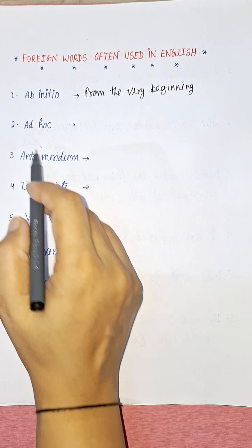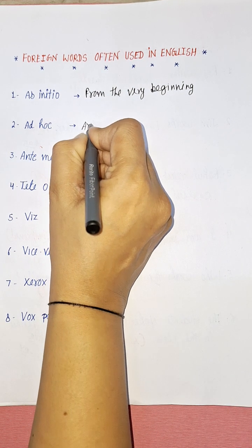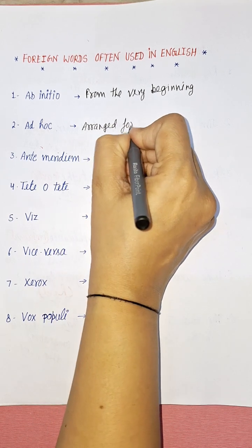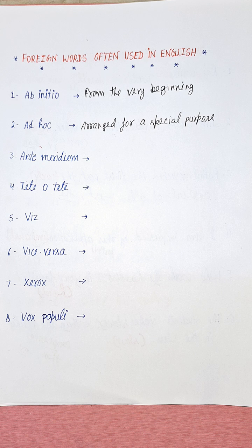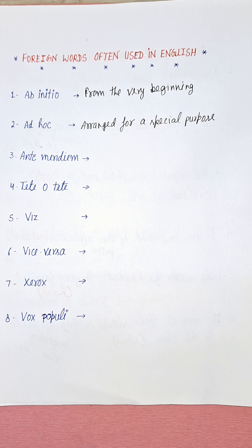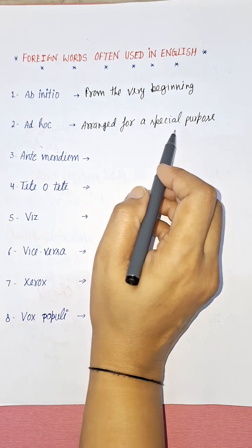Now let's take the next word: ad hoc. Ad hoc means arranged for a special purpose, or on a temporary basis. For example: 'I work for her on an ad hoc basis' — meaning on a temporary basis. Another example: 'The discussions were on an ad hoc basis' — meaning arranged for a special purpose.